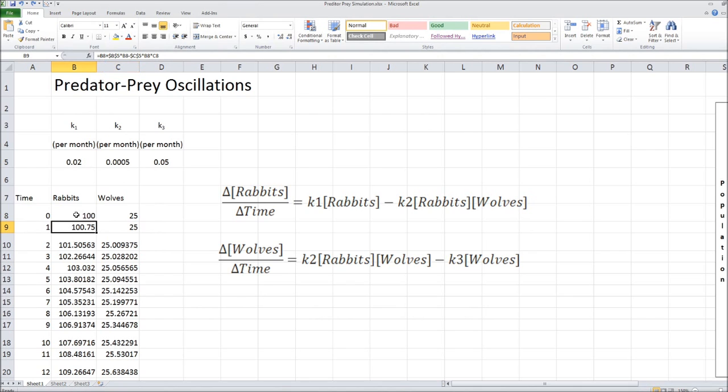It's the number that we started with, B8. Plus the rate constant for the first step, which produces rabbits, times the number of rabbits, times the number of rabbits.